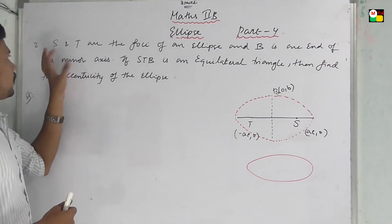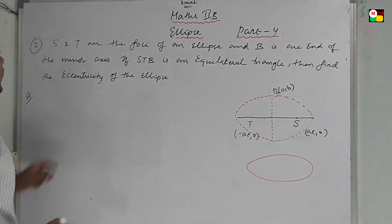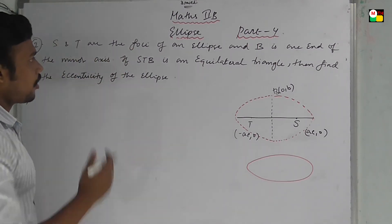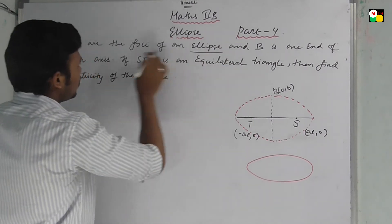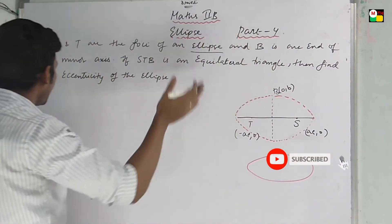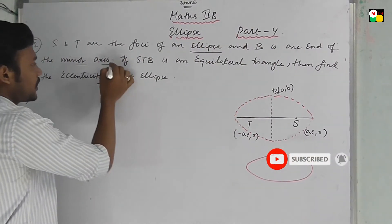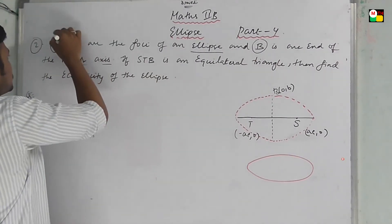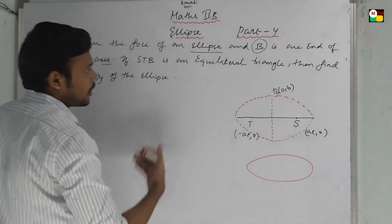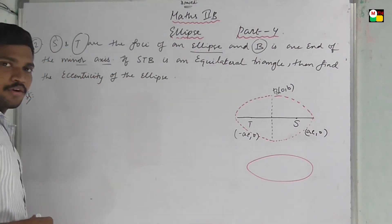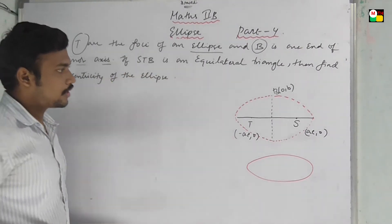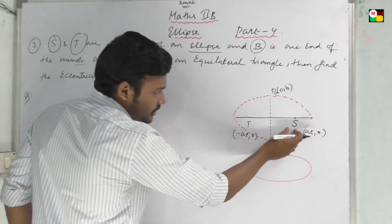Second problem: Show that S and T are the foci of an ellipse and B is one end of the minor axis. We need to show that triangle STB is an equilateral triangle, and find the center of the ellipse. Let's draw the diagram.